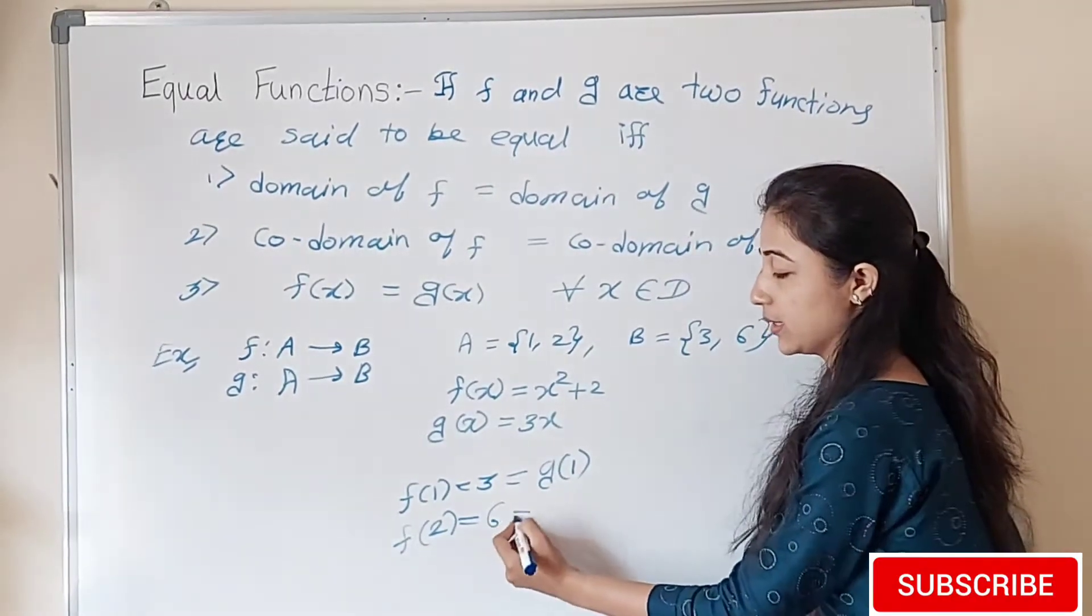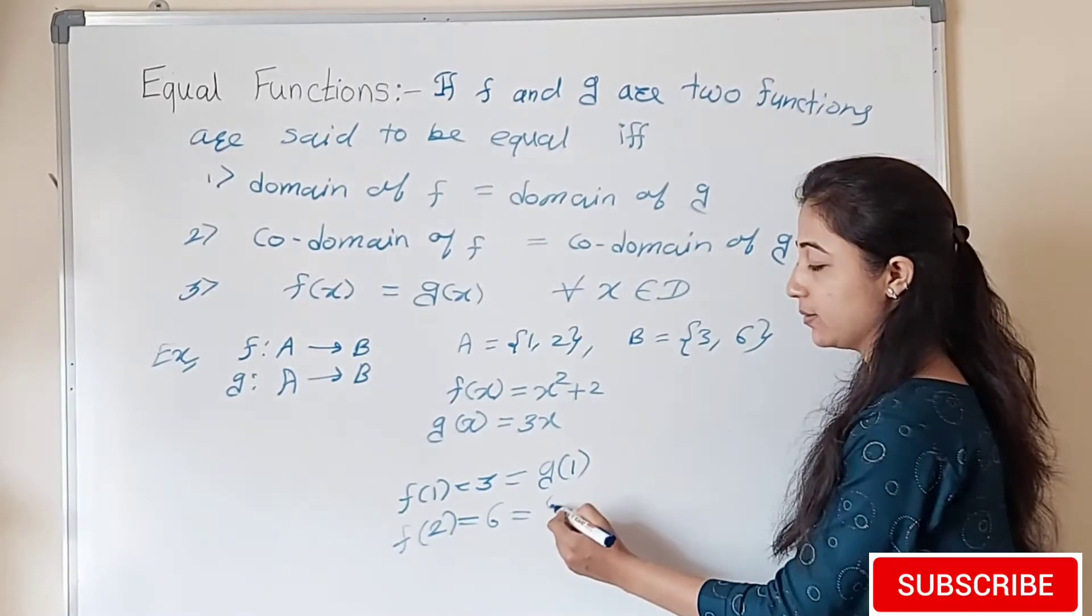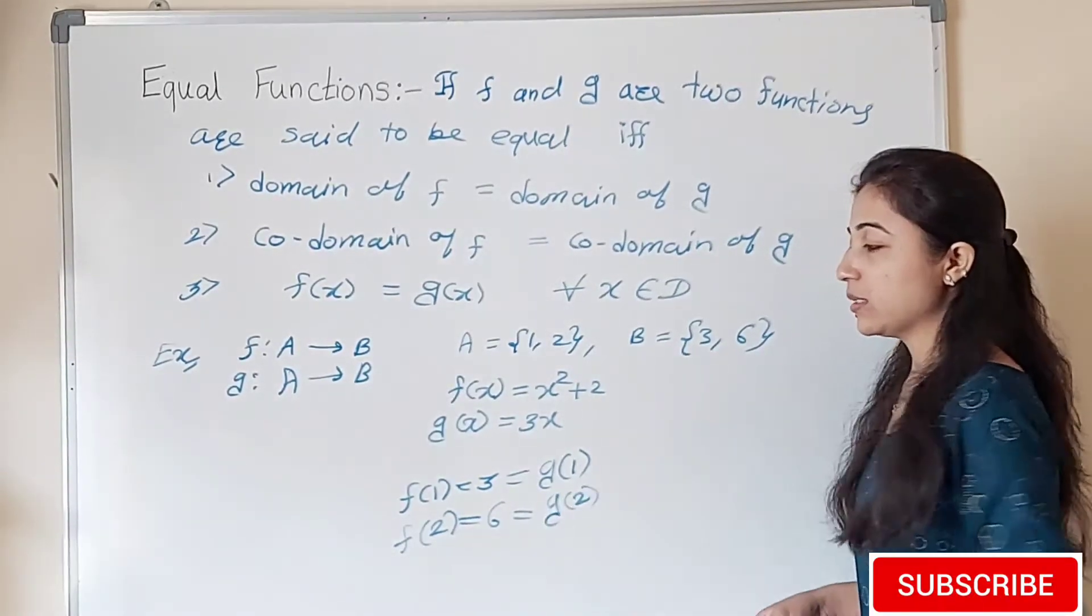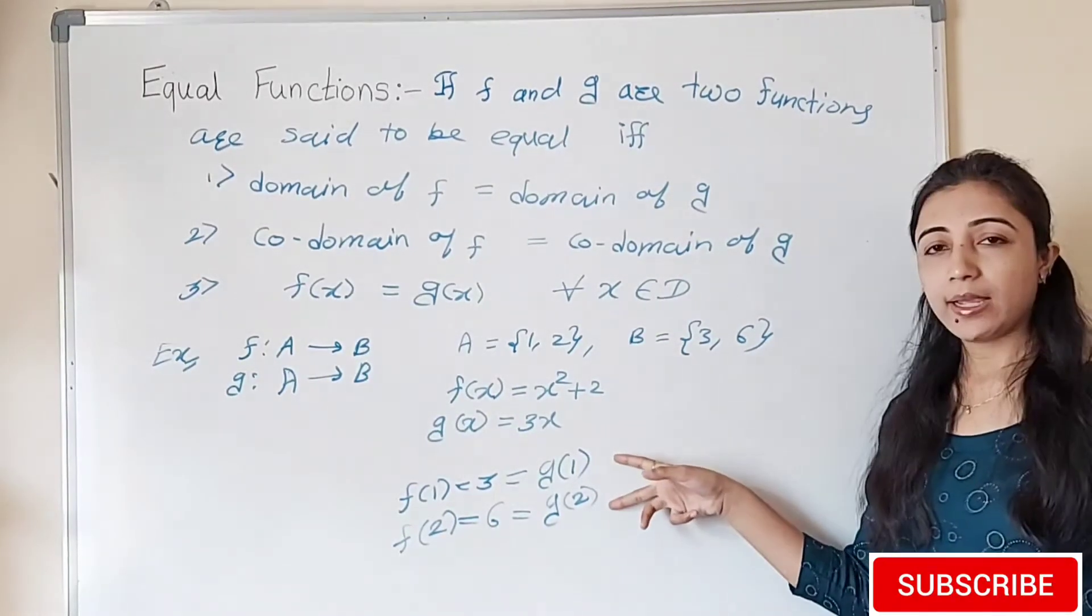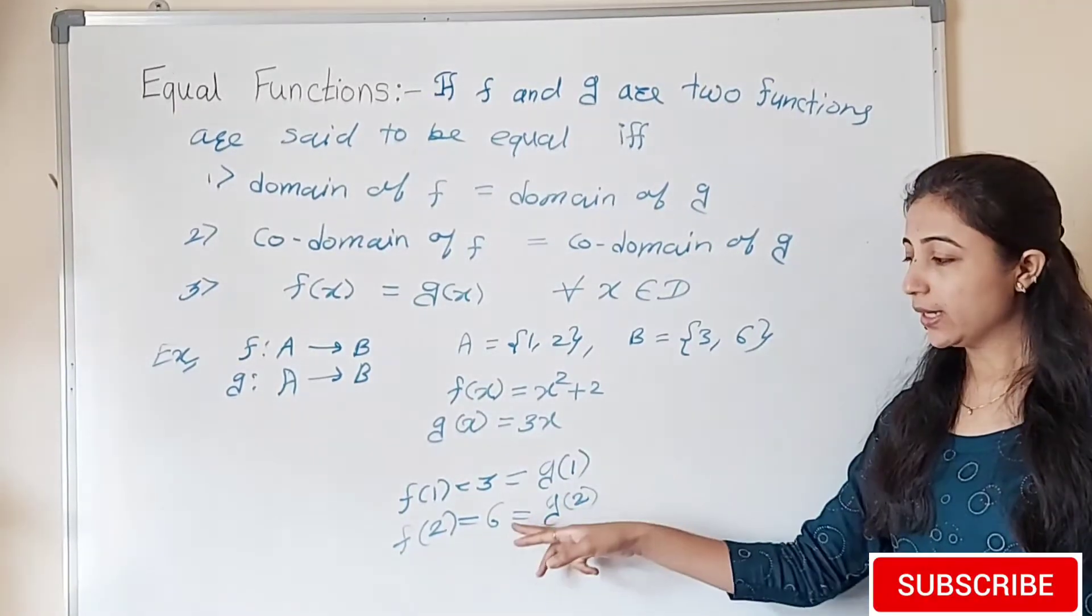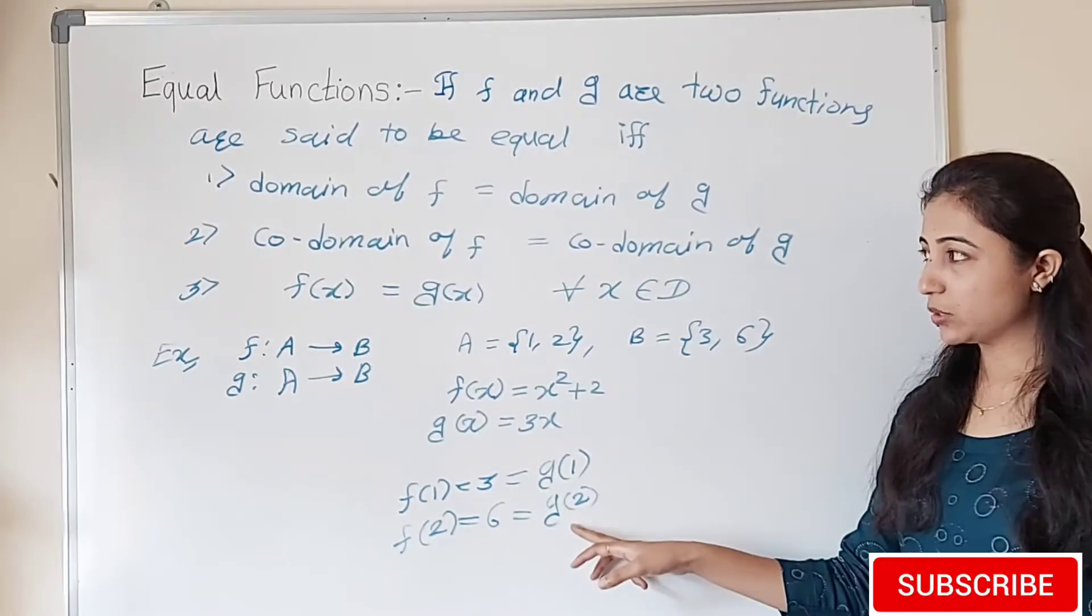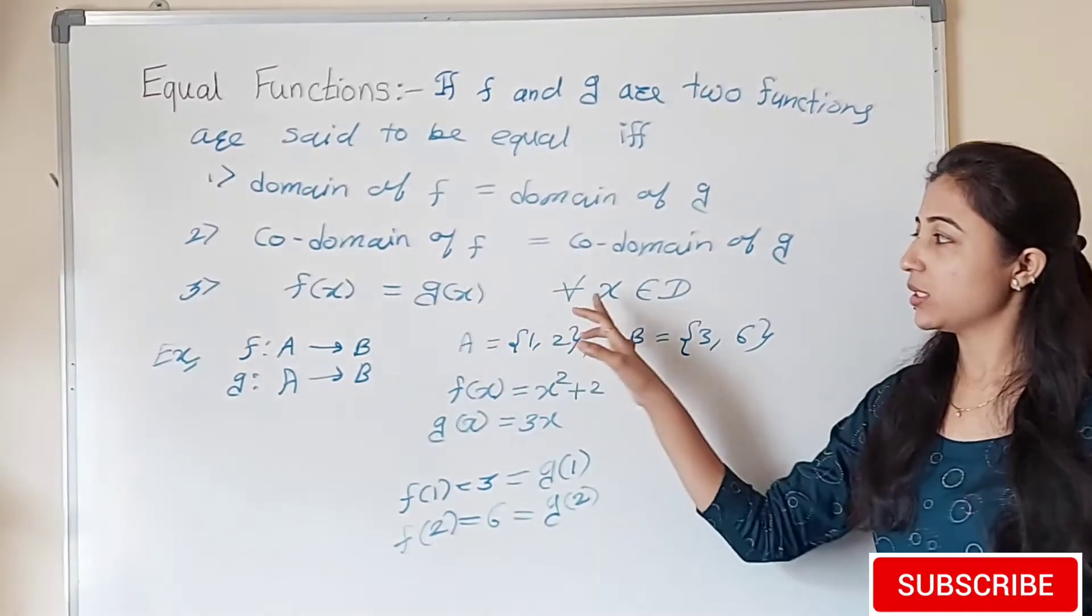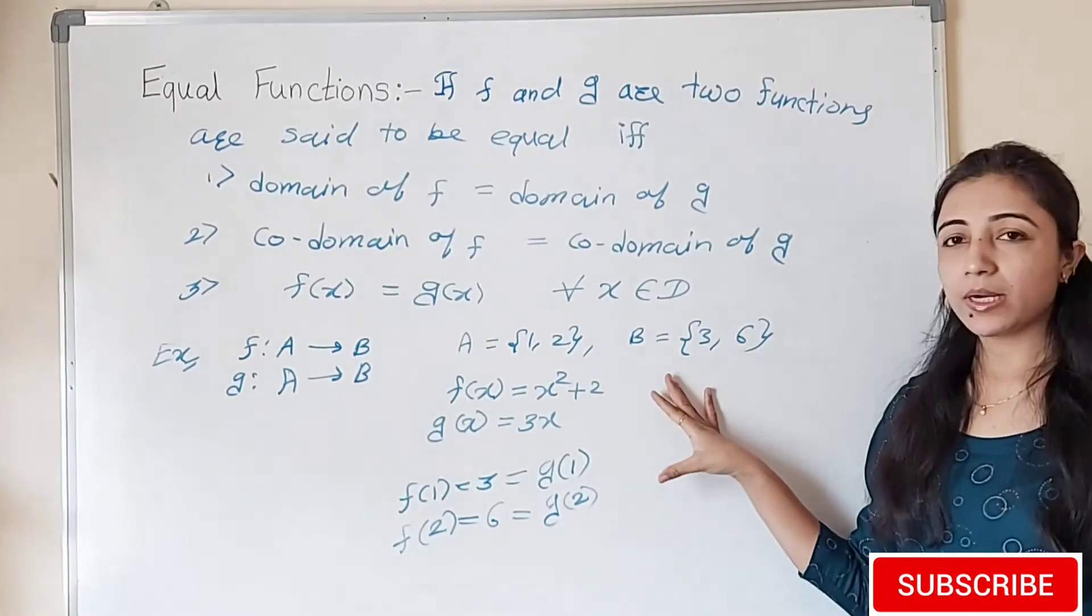Now next value of domain is 2. If we put x equals 2, then f(2) equals 4 plus 2 equals 6. And g(2) equals 3 times 2 equals 6. That means for every value in the domain, the corresponding images with respect to function f and g are equal.